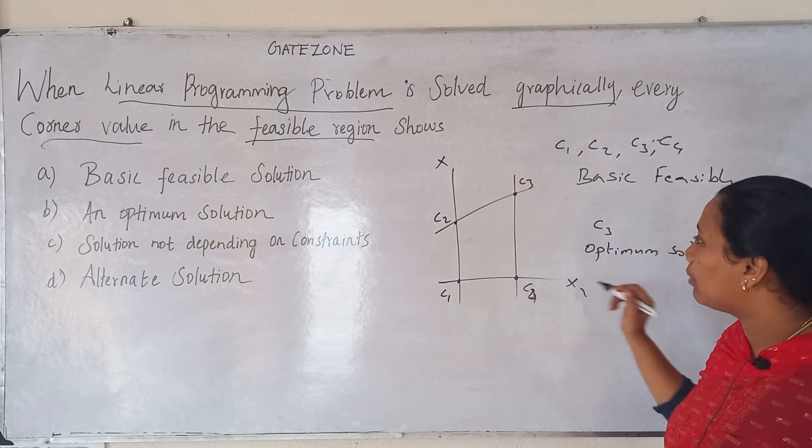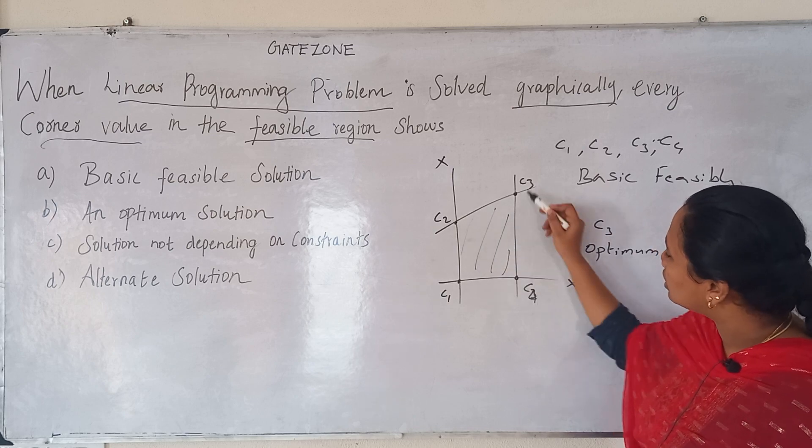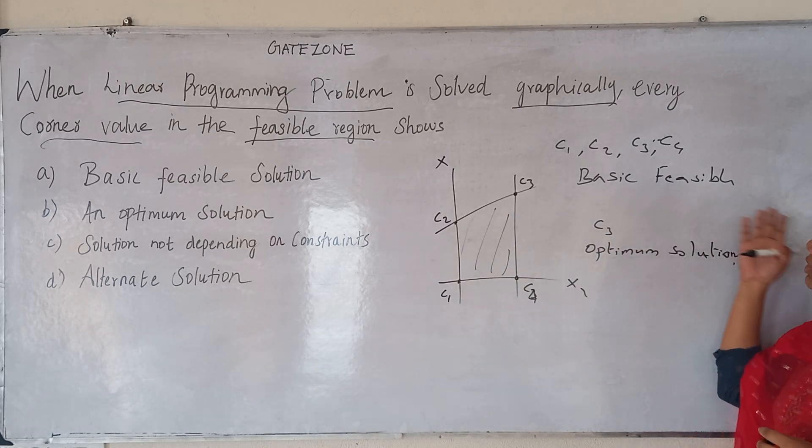Now, graphically, we will solve C1, C2, C3, C4 in the feasible region. C1, C2, C3, C4 in every corners represent basic feasible solution.